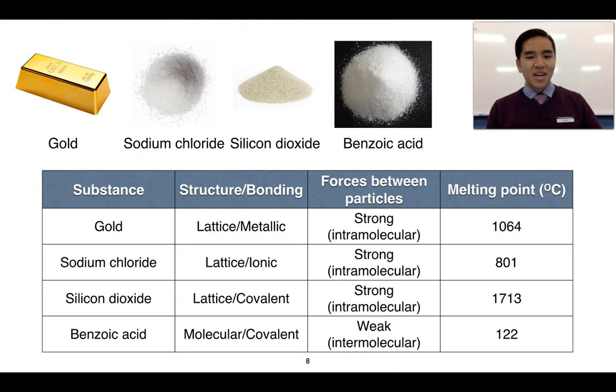To look at this, we've got a table of information about four substances: gold, sodium chloride, silicon dioxide, and benzoic acid. And I've summarized here the differences in the structure as well as the bonding of these materials.